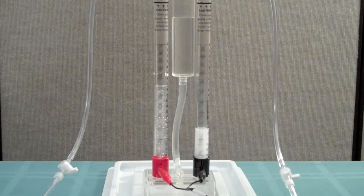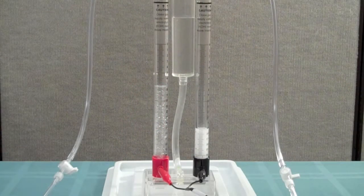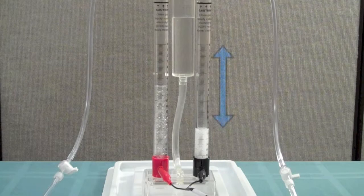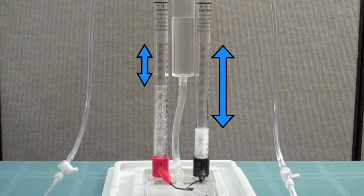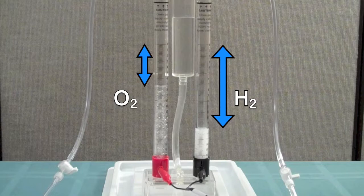Second, we can observe the volumes of the gases produced. As the electrolyzer stores the gases, you will notice that the black storage column has twice as much gas stored as the red column. Again, since two hydrogen molecules are produced for every one oxygen molecule, the black side must be storing hydrogen.